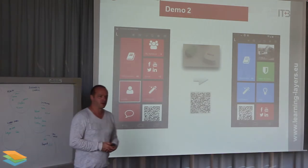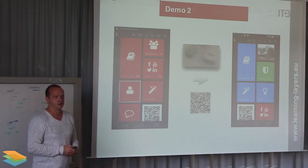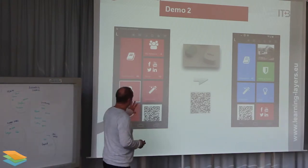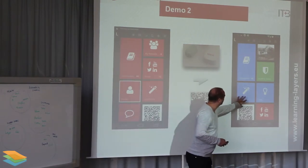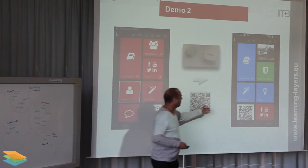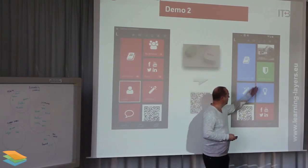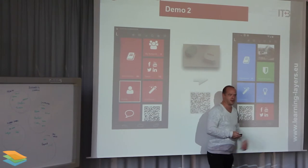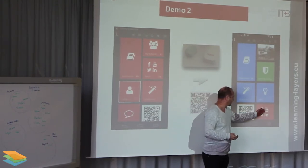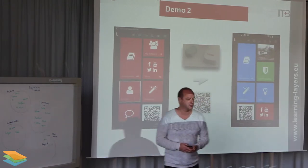Now the three contexts we presented yesterday. The first context is the tools, machines and materials context, where the learning toolbox adapts to the machine or tool that you're using. You get information with respect to the machine, health and safety information, and so on, linked perhaps to the producer or manufacturer of that tool.